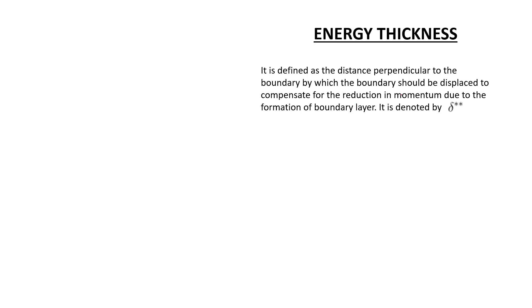Now let us see the definition of energy thickness. Energy thickness is defined as the distance perpendicular to the boundary by which the boundary should be displaced to compensate for the reduction in energy due to the formation of the boundary layer. It is denoted by delta star star.